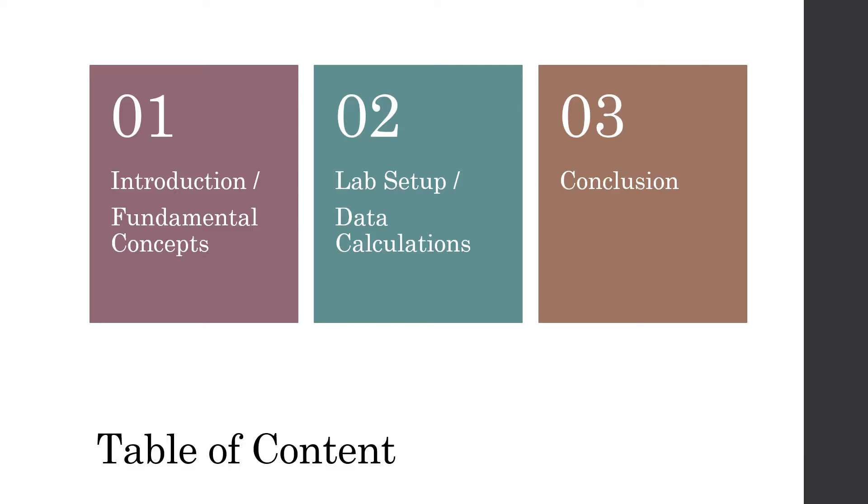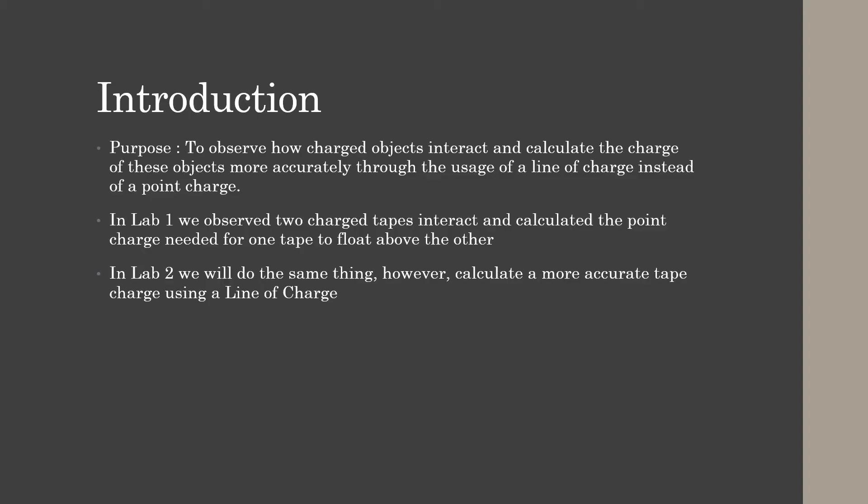This is lab two, lines of charge, and it's a continuation of lab one which was point charge. In this lab we're basically redoing lab one where we're observing how charged objects interact with each other. However, instead of only looking at a point charge, which is a single point on the charged object, which in this case is two pieces of tape, we are instead looking at a line of charge that's going throughout the entire object. By doing this, we are hoping to create a more accurate calculation of charge.